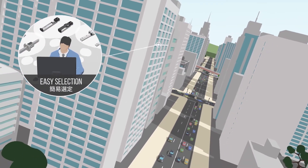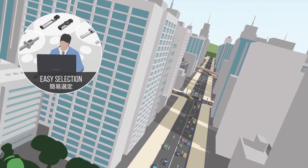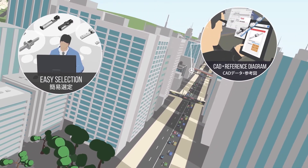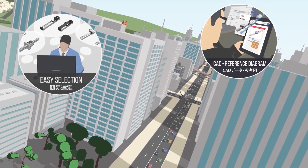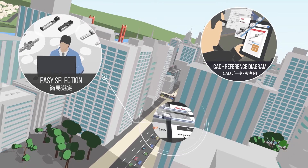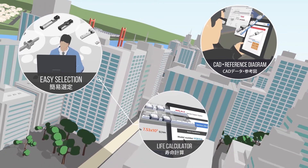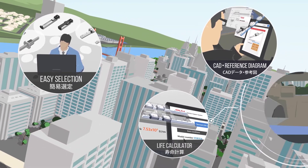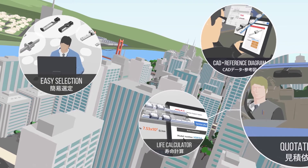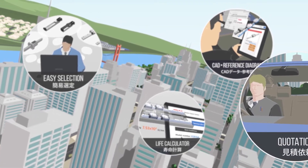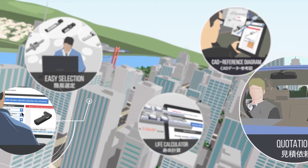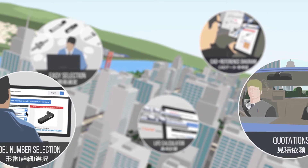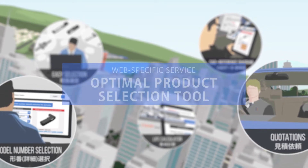There are lots of model numbers and you don't know which one to pick. You want to get product CAD data and Blueprint SysApp. You want to know the service life of the selected product. You want to know quotations quickly. Whether outside or at the office, THK's web service supports you on the ground level.